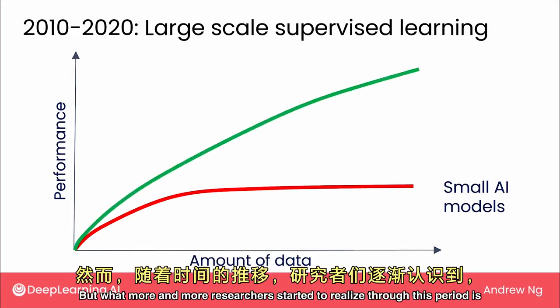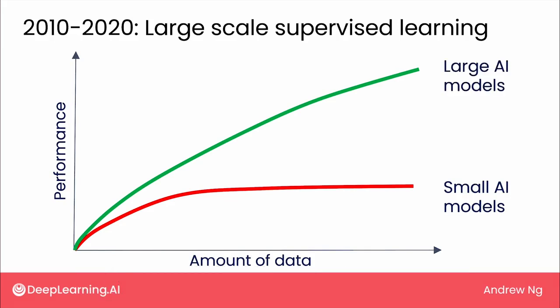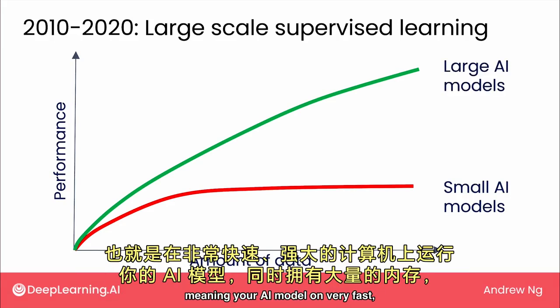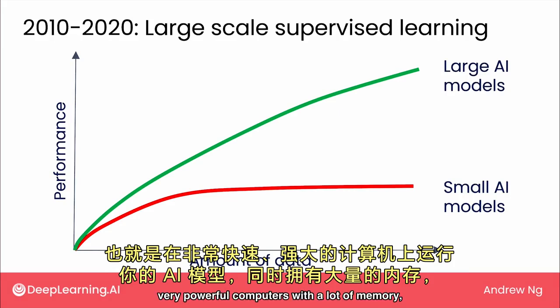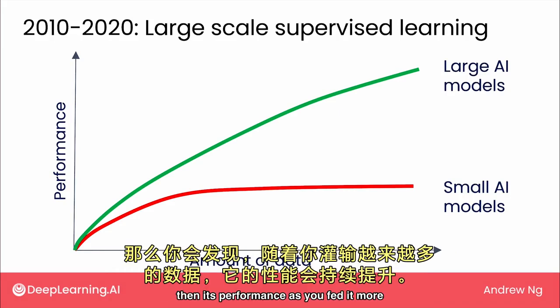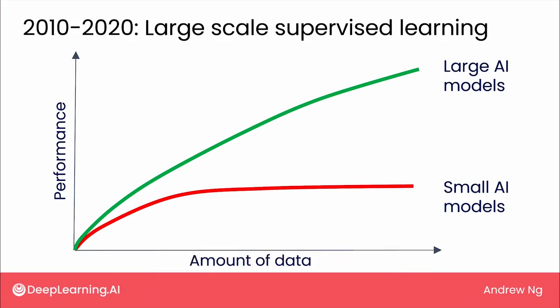But what more and more researchers started to realize through this period is if you were to train a very large AI model, meaning an AI model on very fast, very powerful computers with a lot of memory, then its performance, as you fed it more and more data, would just keep on getting better and better.